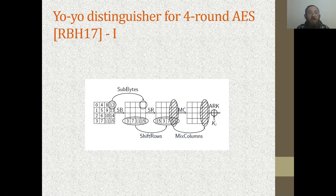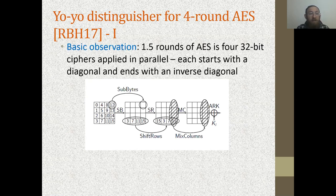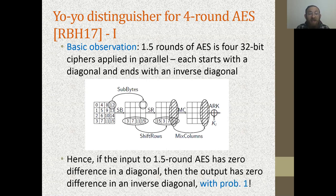We start by describing the yoyo distinguisher on four-round AES of Rønjom et al. The basic observation is that one-and-a-half rounds of AES is actually four 32-bit ciphers applied in parallel, each starting with a diagonal and ending with an inverse diagonal. For example, starting with diagonal {0, 5, 10, 15}: after SubBytes it stays {0, 5, 10, 15}; after ShiftRows it moves to the first column {0,1,2,3}; after MixColumns, AddRoundKey, SubBytes it remains the first column; then ShiftRows moves it to inverse diagonal {0, 7, 10, 13}. Hence, if the input to one-and-a-half rounds of AES has zero difference in some diagonal, then the output has, for sure, zero difference in some inverse diagonal.